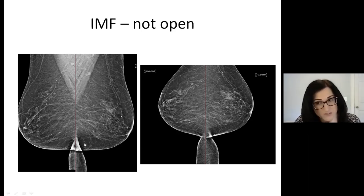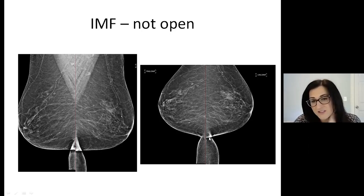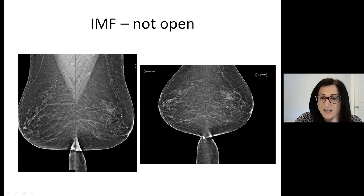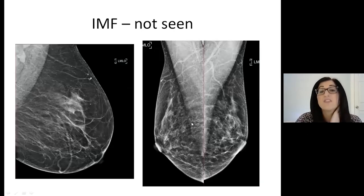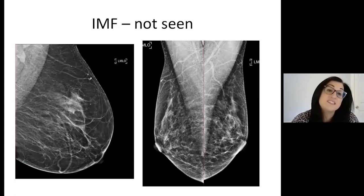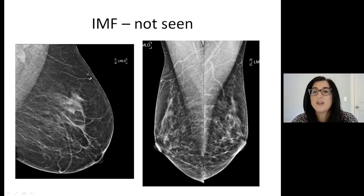This technologist realized there was some limitation to her film and immediately took IMF views with them open. You can see the difference specifically here — it still didn't get quite as open here, but you can see everything and we can be a hundred percent sure there are no calcifications and no mass hiding in this inframammary fold. Another issue is when inframammary folds are not even seen — no inframammary fold at all. IMFs need to be seen and open.